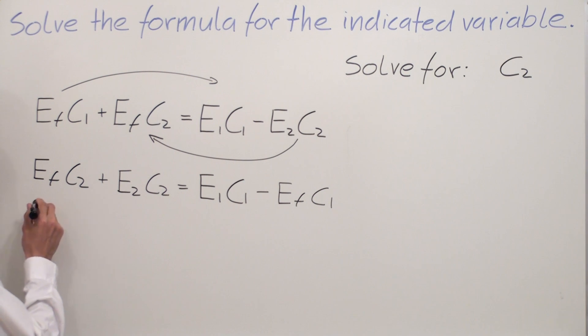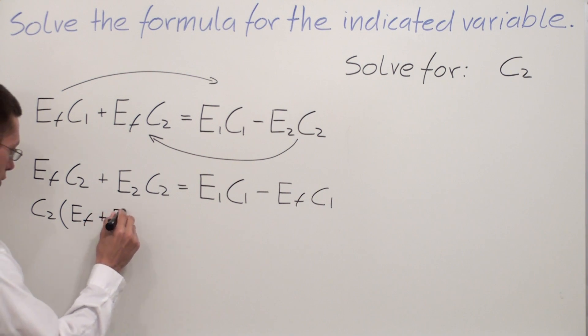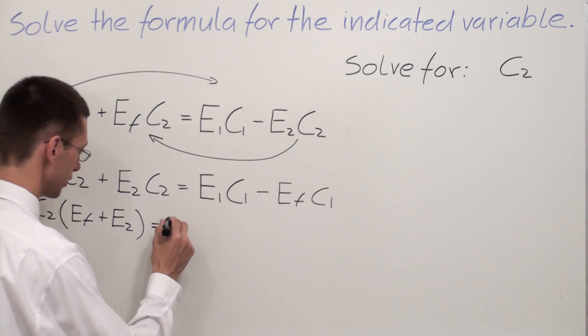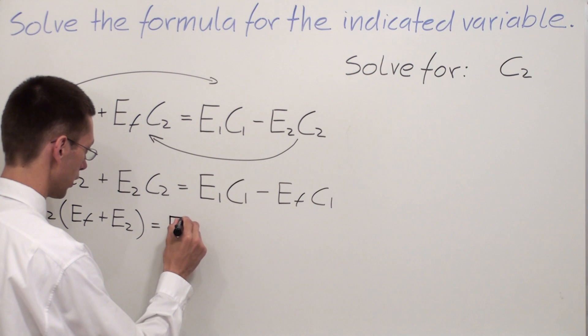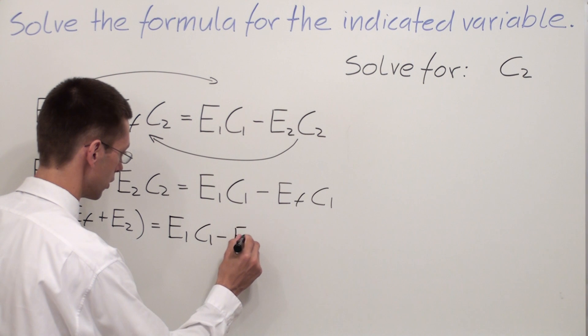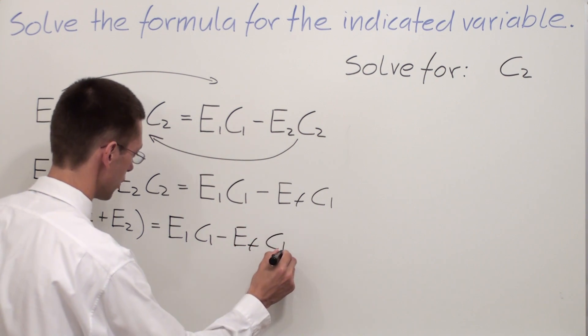In other words, we are going to pull this out on the front of the parenthesis. So I have C2, open parenthesis, and inside the parenthesis we are going to write everything left from those two terms: EF plus E2. And the right side of the formula is going to stay the same: E1 C1 minus EF C1.